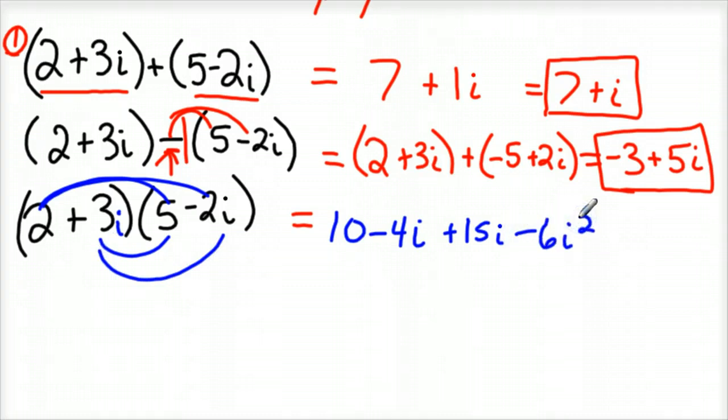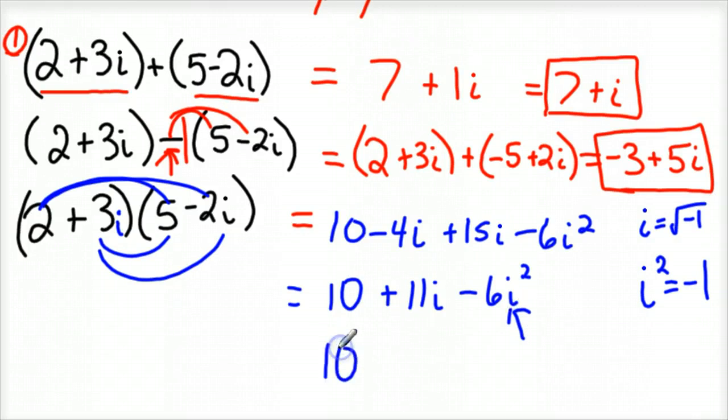And so now it becomes just a matter of simplifying that. So if we simplify that, you would have 10 plus 15 and 4 is 11i. And then minus 6i squared so far. But here's the deal. We know, if you've studied imaginary numbers at all, that i squared is equal to negative 1. Just like i is equal to the square root of negative 1. So that we can substitute that in for this i squared. That is negative 1. So really we have 10 plus 11i plus 6. Because you'd have negative 6 times negative 1. This is what I did in my head, which makes it positive 6.